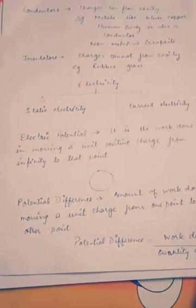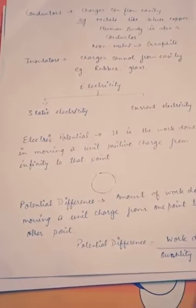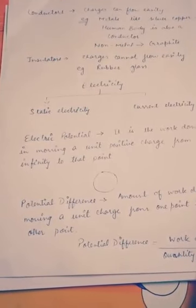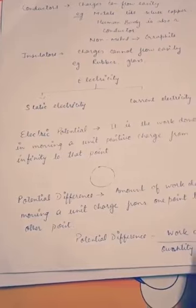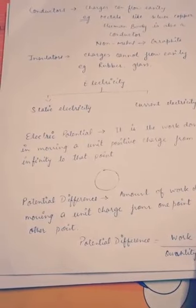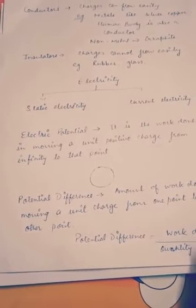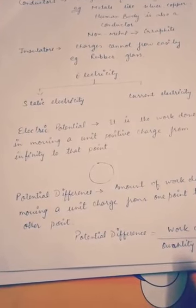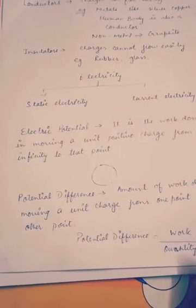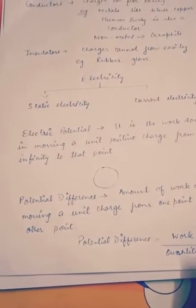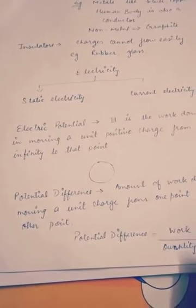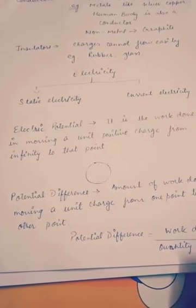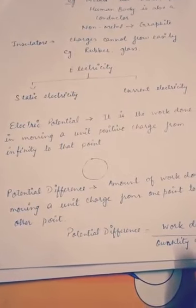Now in this part we will study about insulators and conductors. Substances can be divided into two categories: conductors and insulators. The substances through which charges can flow easily are called conductors. Metals are good conductors of electricity — metals like silver, copper, and aluminium are all good conductors of electricity.